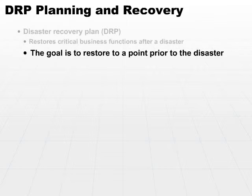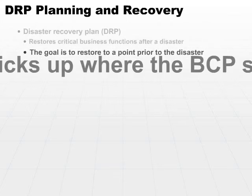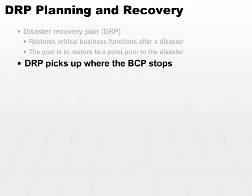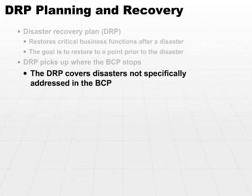Now, this sometimes can be a fairly large task. The DRP picks up where our business continuity plan leaves off. It is specifically oriented to cover disasters that are not covered in the BCP. The two plans work together — the BCP starts first, and the Disaster Recovery Plan kicks in if necessary.